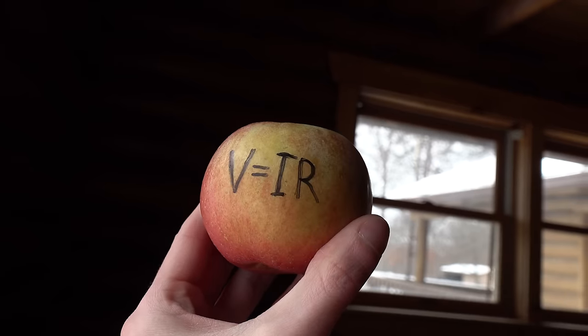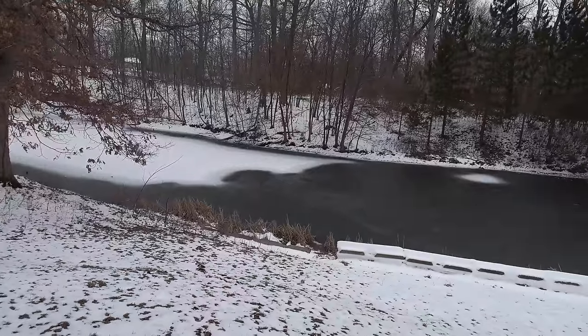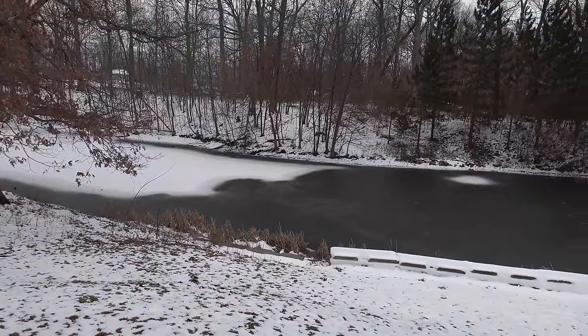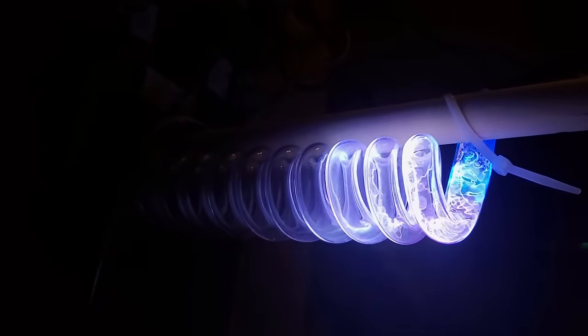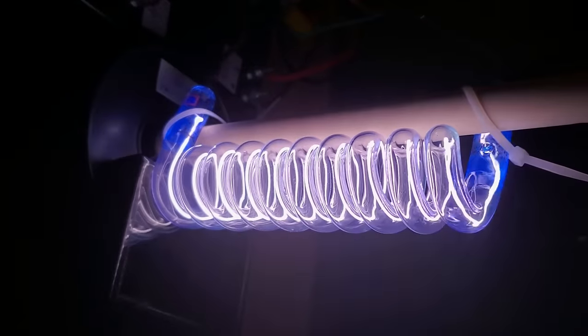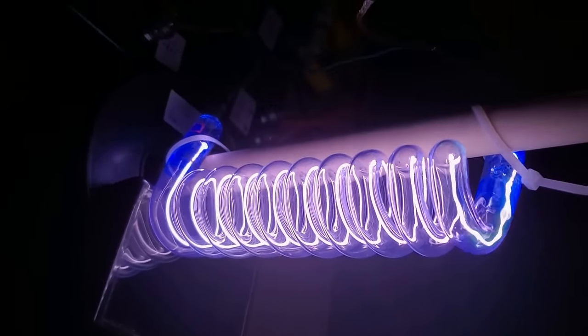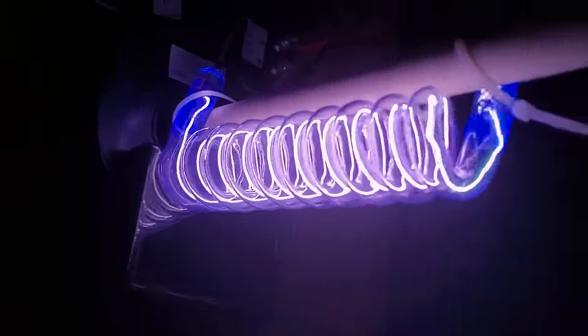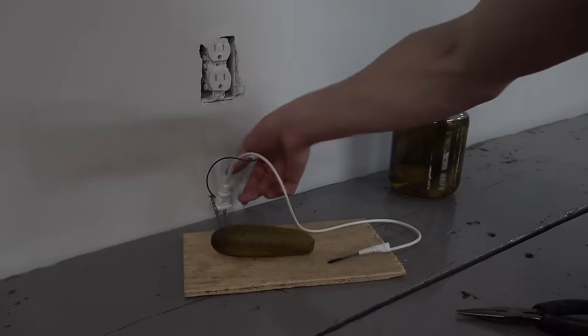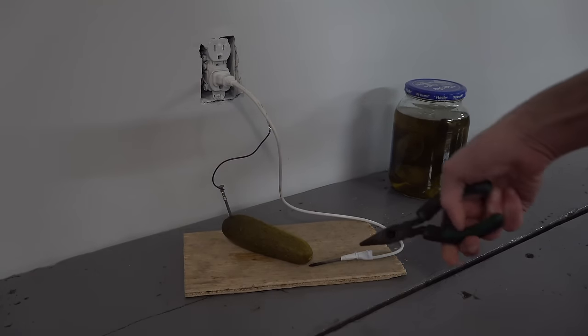It turns out, you can throw Ohm's law out the window in situations like this, because the apple experienced something called dielectric breakdown. When the voltage across an insulator reaches a high enough point, the molecules in it get shredded by the electric field. This means the insulator suddenly becomes a conductor and will allow a huge amount of current to pass through it. Ohm's law does not tell you when this happens. For human skin, this point is roughly about 500 volts or so, but this varies considerably.